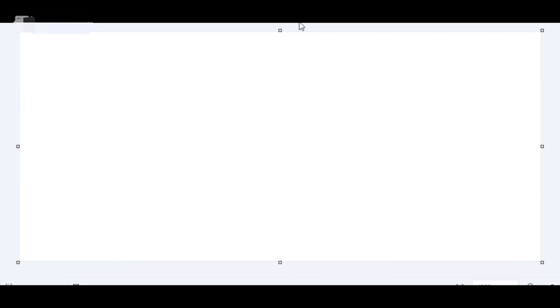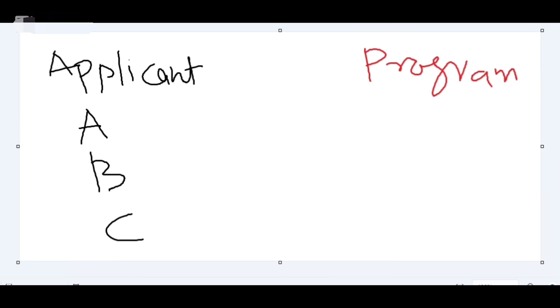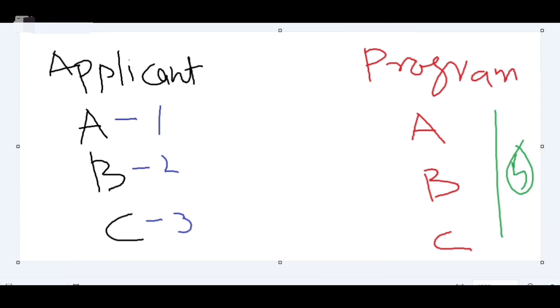Before starting the algorithm, one important thing: the rank order list algorithm always favors the applicant, not the program. For example, an applicant ranked three programs A, B, and C as number one, two, and three respectively. All programs have five positions for PGY-1. Program A ranked the applicant as number three, while programs B and C ranked the applicant as number one.